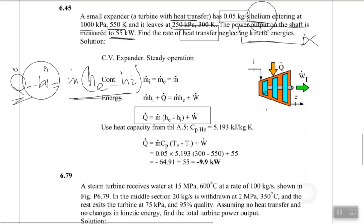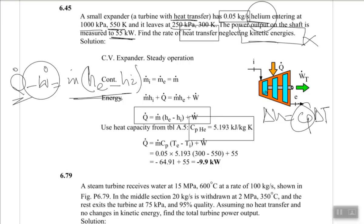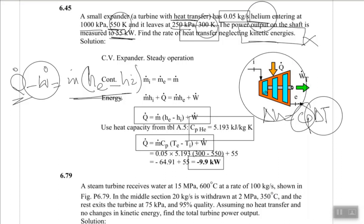The cp of helium is 5.193 kJ/kg·K. The inlet and exit temperatures are given, so ΔT is known. Substituting all values into the equation gives Q̇ = −9.9 kW. The negative sign indicates heat is being transferred out of the system.